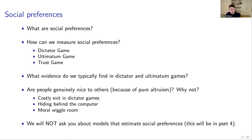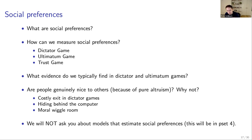There's also evidence that self-image matters — people want to think of themselves as good. The moral wiggle room evidence suggests people engage in behavior where they delude themselves into thinking they're being nice when they're not. This tells us people are perhaps not as altruistic as dictator or ultimatum games or donation behavior might suggest. We will not ask you about models estimating social preferences (e.g., Fehr and Schmidt) — that will be in a future problem set.